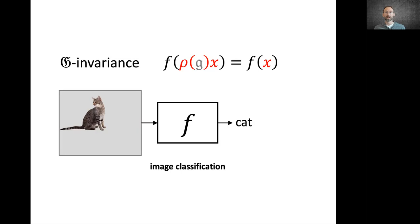This geometric structure of the domain that underlies the input signal imposes structure on the class of functions that we're trying to learn. We typically have two examples. We can have functions that are unaffected by the action of the group, what we call invariant functions. A good example is image classification problem,